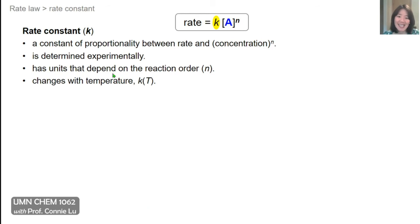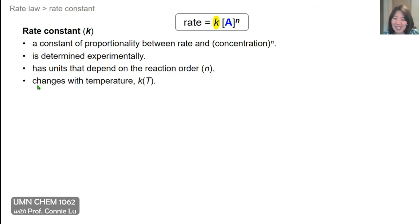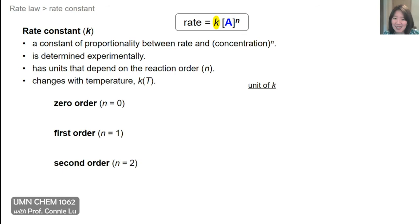The rate constant K is the constant of proportionality between rate and concentration raised to the nth power. It's determined experimentally. Interestingly, K does have units, but they depend on the reaction order. Another important thing about K is that it changes with temperature — K is a function of T. We can look at zeroth, first, and second order reactions and figure out the units of K for each case.